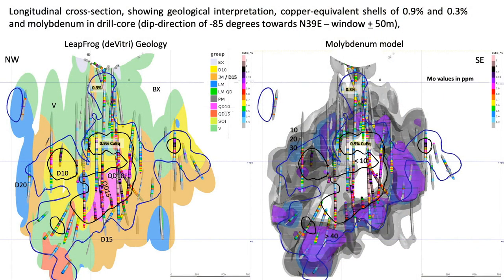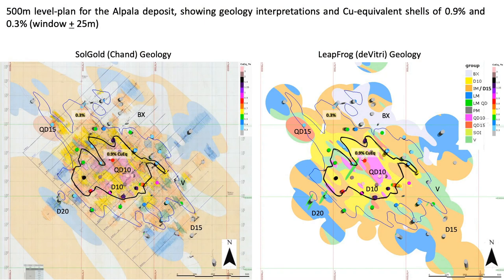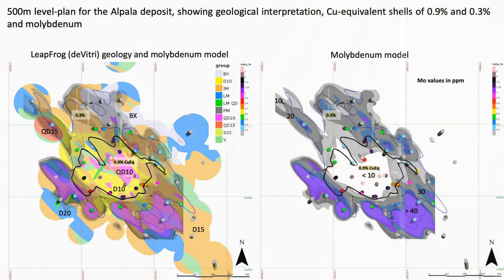A long section shows about a 35-degree plunge of the ore body towards the northwest, related to the D15 intrusion which came in partway through the process, stoping out mineralization. There's a lovely annulus or jelly-donut of molybdenum all around the outside of the high-grade zone. In plan view at 500-meter RL, you again see this annulus of molybdenum — so if you start getting fractures with molybdenum on them, you keep drilling until you drill through it and out the other side. B-vein abundance again shows a very good relationship in all three dimensions.